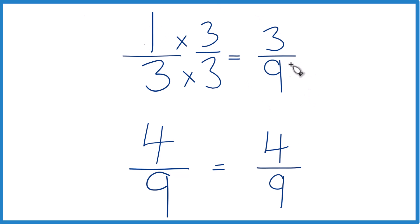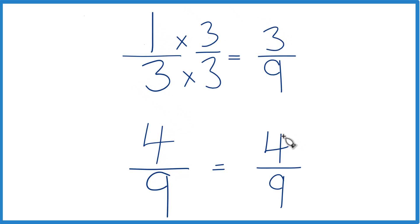Now with the same denominator, I just compare the numerators. And four is larger than three. Since these are equivalent, four-ninths is larger than one-third. And you can even tell how much larger — four-ninths minus three-ninths is one-ninth, so four-ninths is one-ninth larger than one-third.